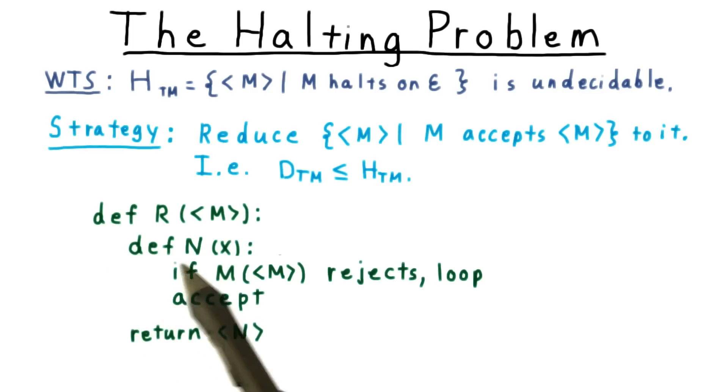The reduction creates a machine n that simply ignores the input and then runs the machine m on itself. If m rejects, then n is going to loop. Otherwise, n accepts.